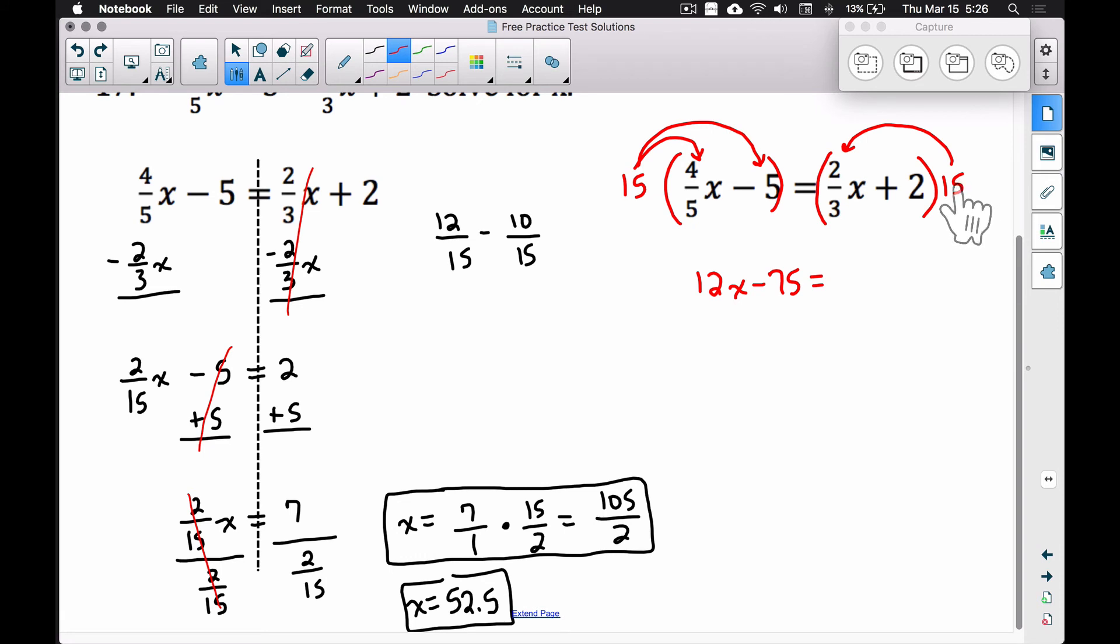15 times 2 is 30 divided by 3 is 10, so we have 10X. Or you could take 15 divided by 3, that gives you 5 times 2, you still get the 10. So we have 10X plus 30. Don't forget to distribute here.